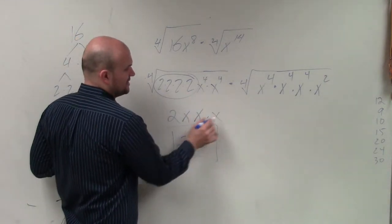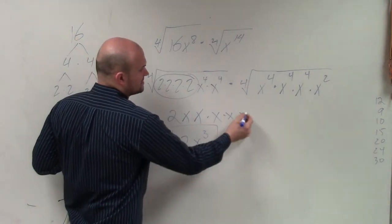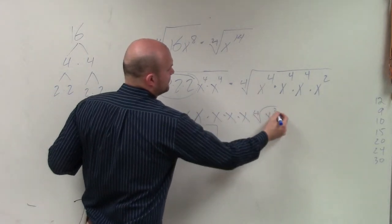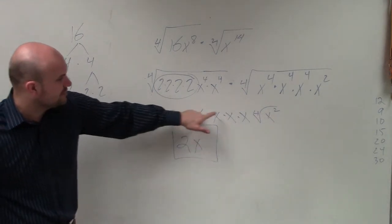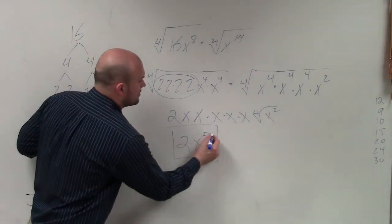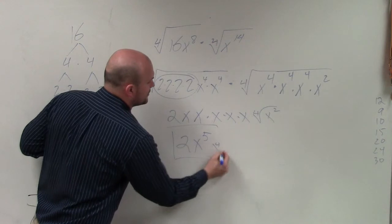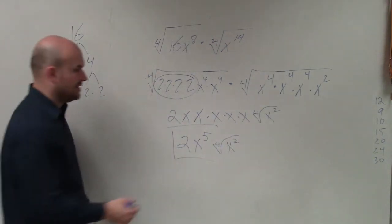so I have two x's here. This would be x times x times x times the fourth root of x squared. So I actually have x to the 1, 2, 3, 4, fifth power times the fourth root of x squared.